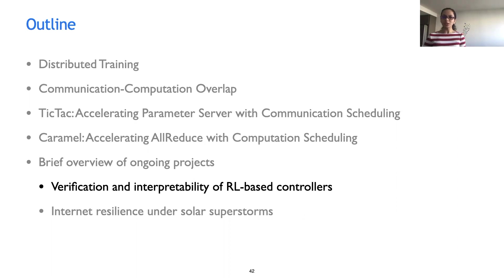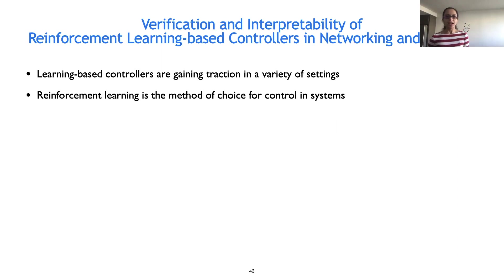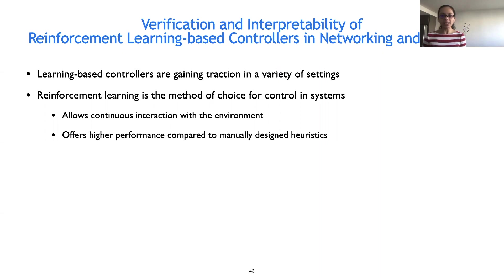The first ongoing project is on verification and interpretability of reinforcement learning based controllers. Learning-based controllers are gaining traction in a variety of networking and systems settings, and reinforcement learning is the method of choice for control in these settings because it allows continuous interaction with the environment and works well for dynamic settings such as networks and systems. Recently it has been shown that RL-based controllers offer much higher performance compared to manually designed heuristics previously used in congestion control, cluster scheduling, load balancing, and other systems control tasks.